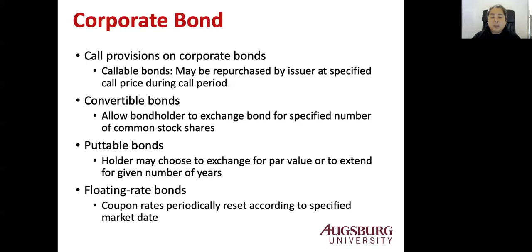A floating rate bond is a bond whose coupon rate changes over the period. Usually this bond is less risky than fixed rate bonds. Sometimes it's tied with the interest rate, and sometimes it's tied with the inflation rate, depending on the bond's features.